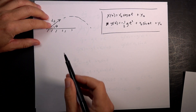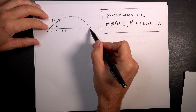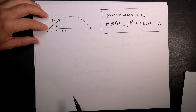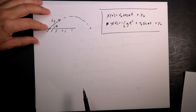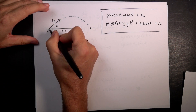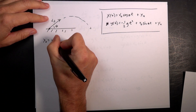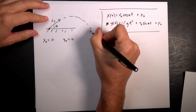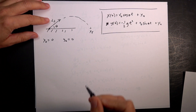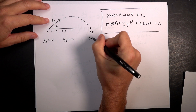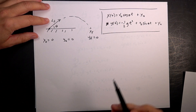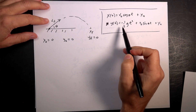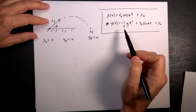Let's just find out how long it takes and how far it goes — just to see how this works. If it starts at x zero equals zero, y zero equals zero, and we want to find x final, then what's y final? y final is zero. If I find time from one equation, I can put it into the other one.